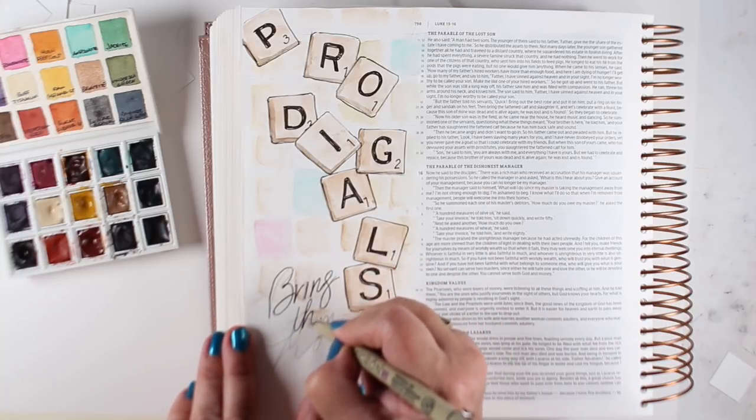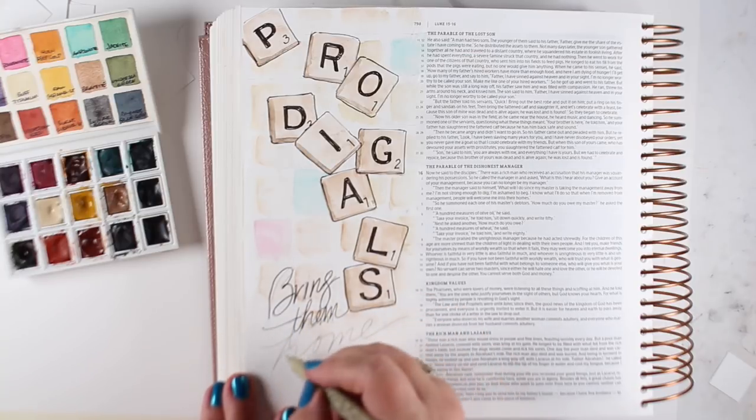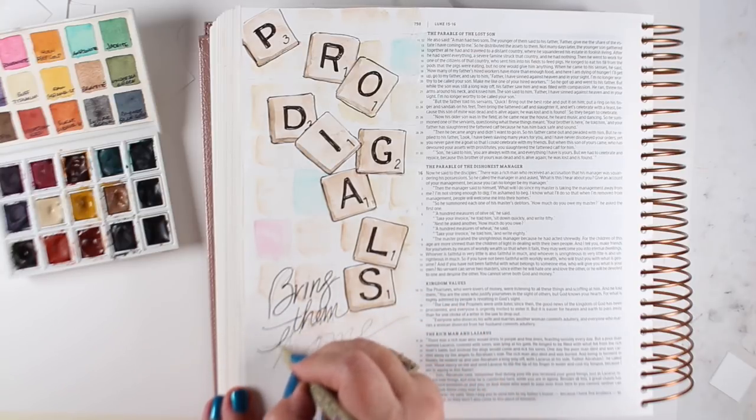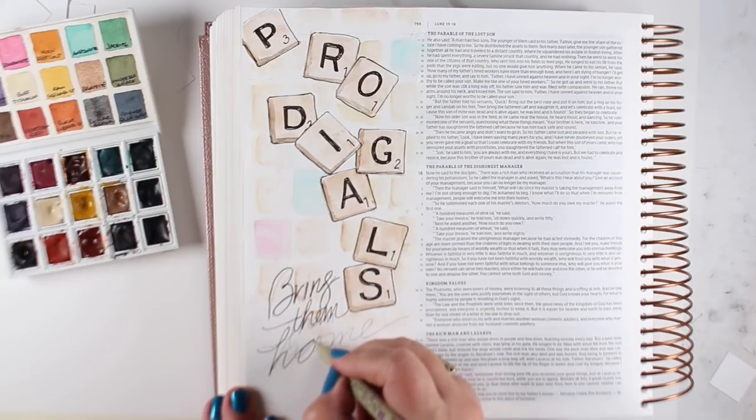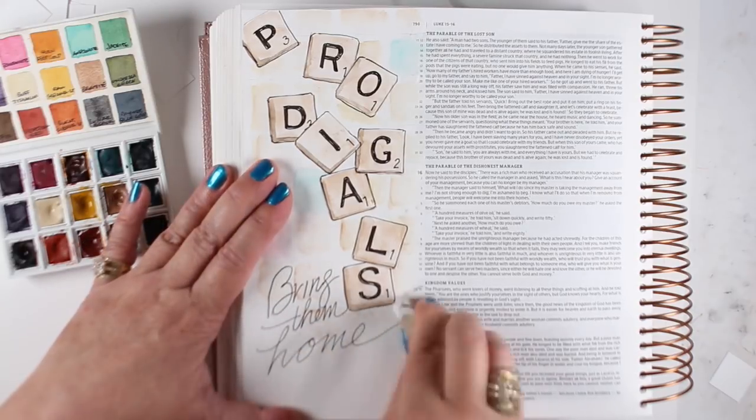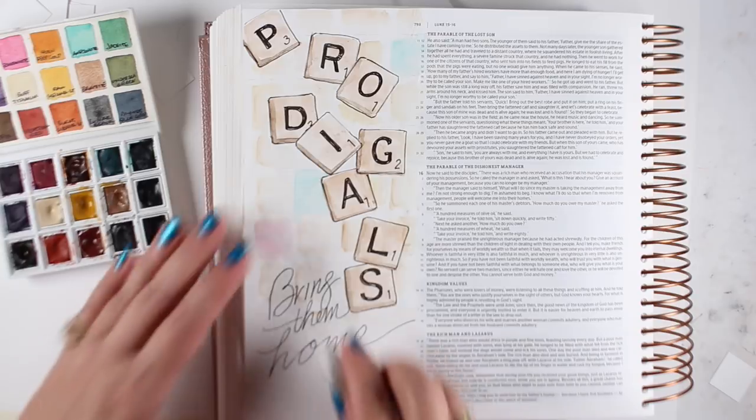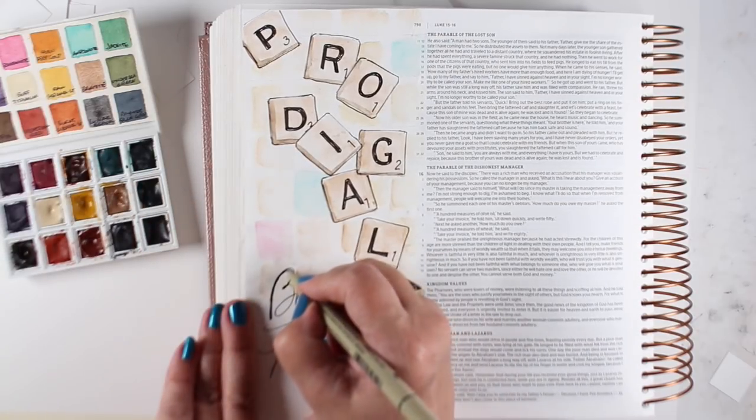And then I'm just going to add bring them home in a script down below. And I'll thicken the letters up a little bit by doing the same thing, going over them again with a pen, erasing my pencil in between, and just reaffirming each one of these letters.